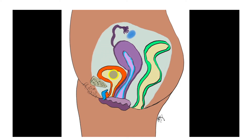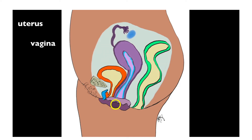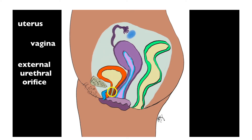The bladder is immediately adjacent or anterior to the vagina and inferior to the uterus. When we look at the inferior aspect of the perineum, we will see the external urethral orifice is in very close proximity to the vaginal orifice. Keep in mind the urethral orifice has no contribution to sexual reproduction in females — it does in males, and we'll look at that when we look at male reproductive anatomy.